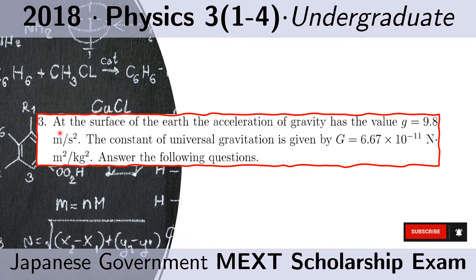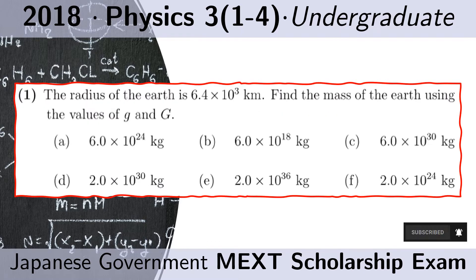Problem 3. At the surface of the Earth, the acceleration due to gravity has the value g equals 9.8 meters per second squared. The constant of universal gravitation is given by G equals 6.67 times 10 to the minus 11 newton meters squared per kilogram squared. Question 1: the radius of the Earth is 6.4 times 10 to the third kilometers. Find the mass of the Earth using the values of g and capital G.